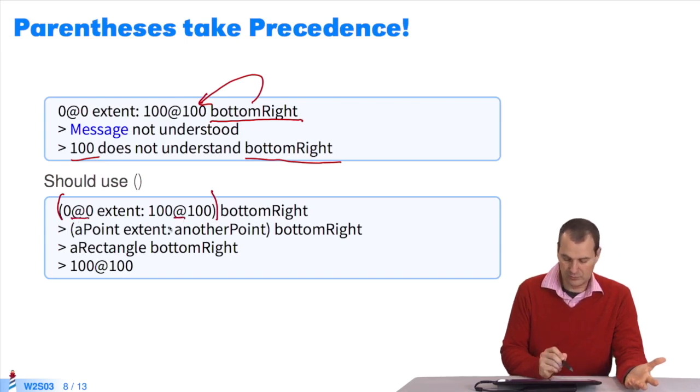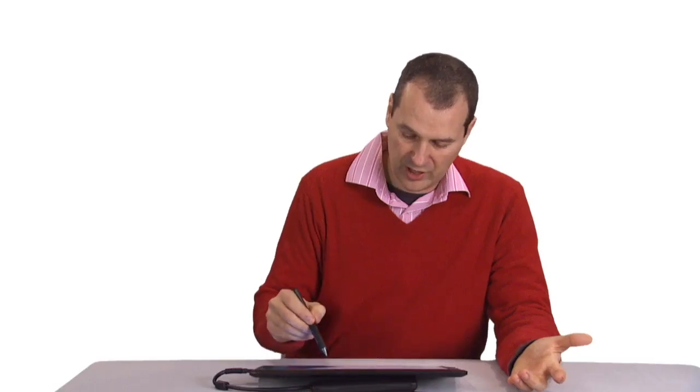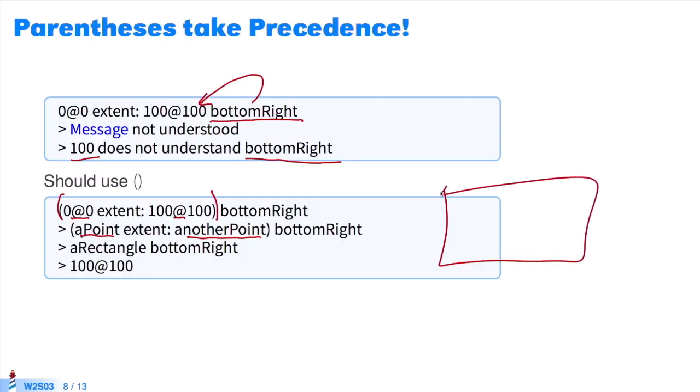Inside, I have two binary messages which are executed. They create points. Two of them get created. I send extent to a point which creates a rectangle. I have a point zero at zero. I pass it extent one hundred at one hundred. It returns this rectangle. I query it for the value bottom right. I get a rectangle. It returns the value of the point here. It is one hundred at one hundred.